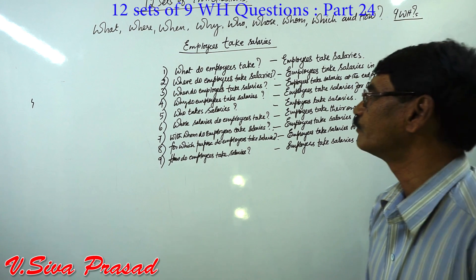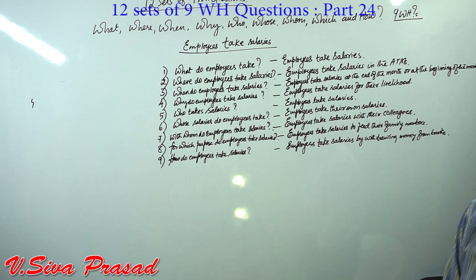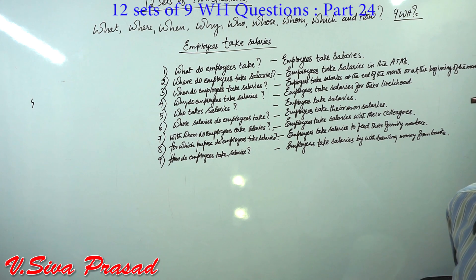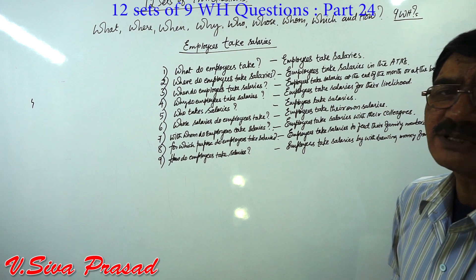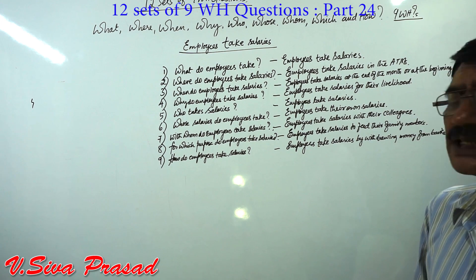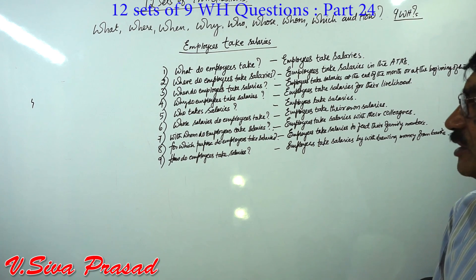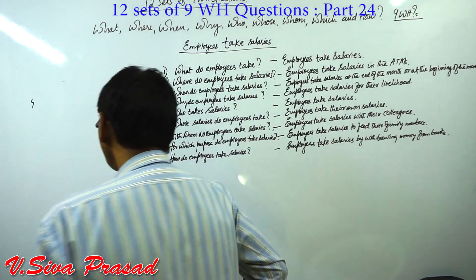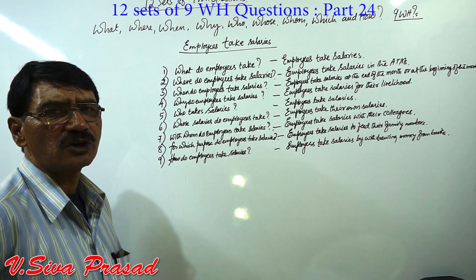Set 10 — Present Perfect Continuous: What have employees been taking? Employees have been taking salaries. Where have employees been taking salaries? Employees have been taking salaries in the ATMs. When have employees been taking salaries? Employees have been taking salaries at the end or at the beginning of the month. Why have employees been taking salaries? Employees have been taking salaries for their livelihood. Who has been taking salaries? Employees have been taking salaries. Whose salaries have employees been taking? Employees have been taking their own salary. With whom have employees been taking salaries? Employees have been taking salaries with their colleagues. For which purpose have employees been taking salaries? Employees have been taking salaries to feed their family members. How have employees been taking salaries? Employees have been taking salaries by drawing money from the banks.